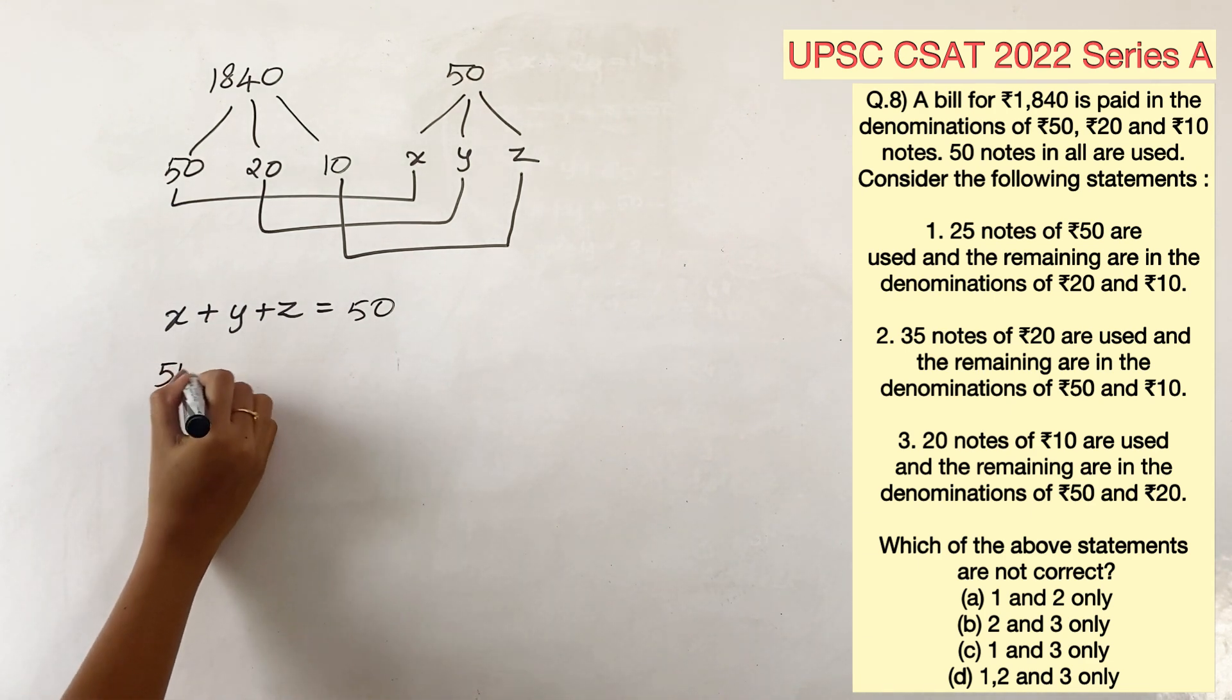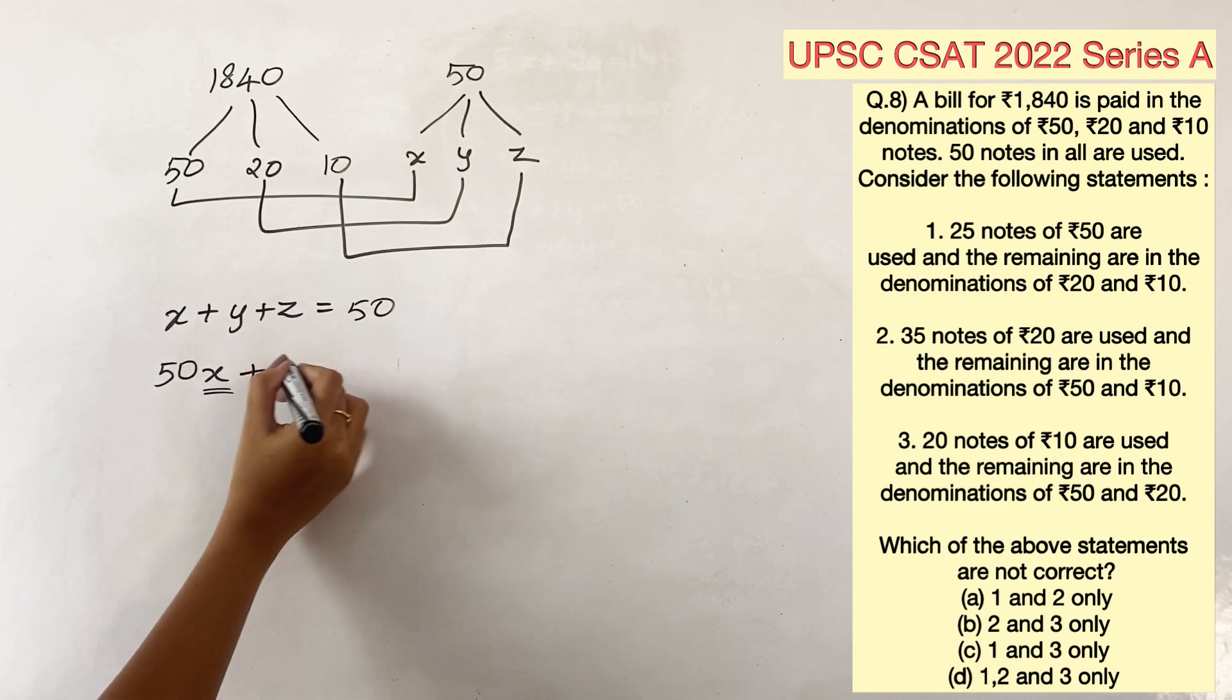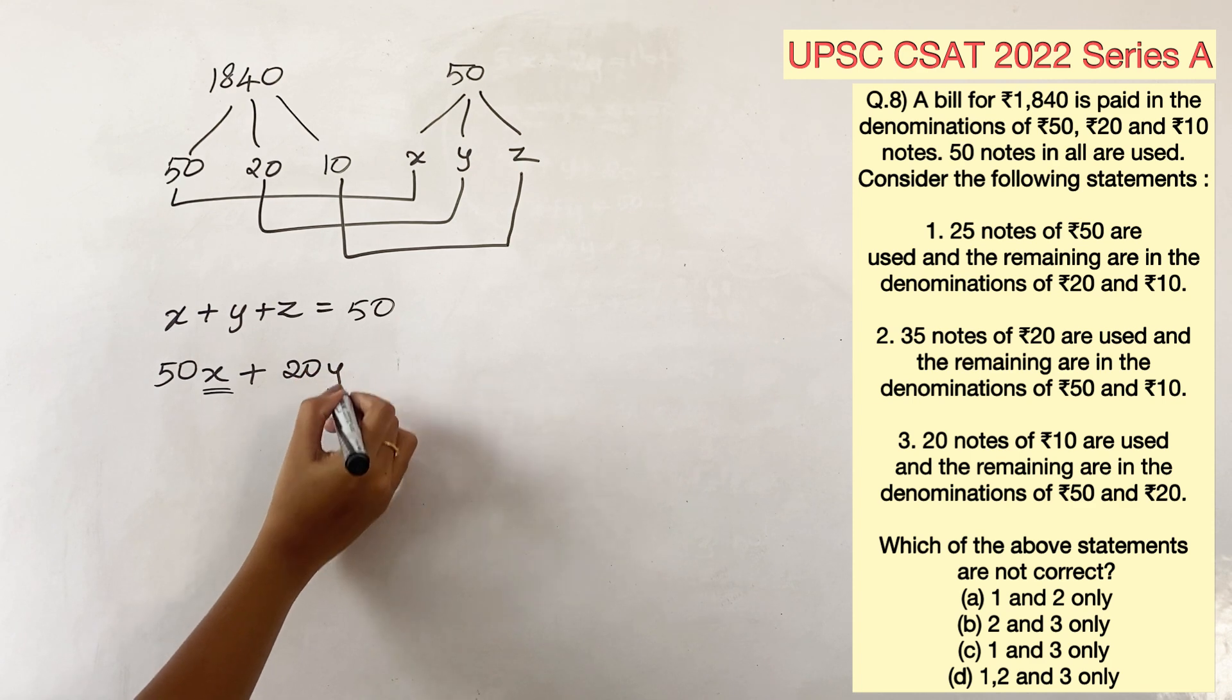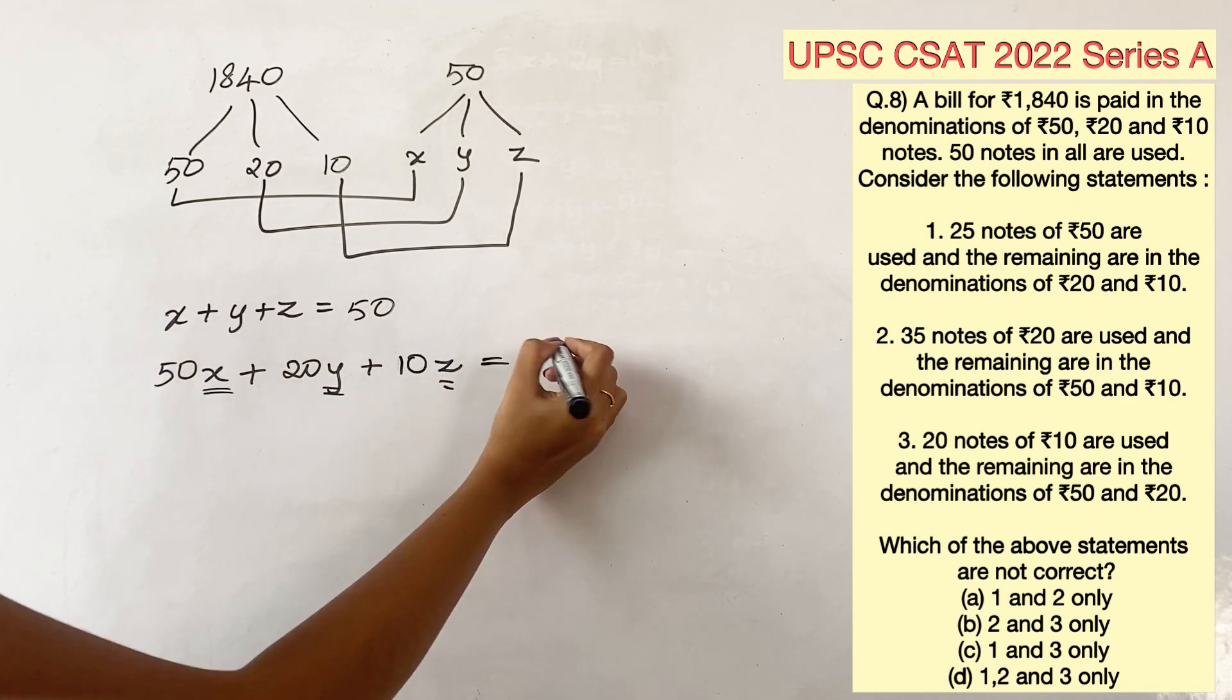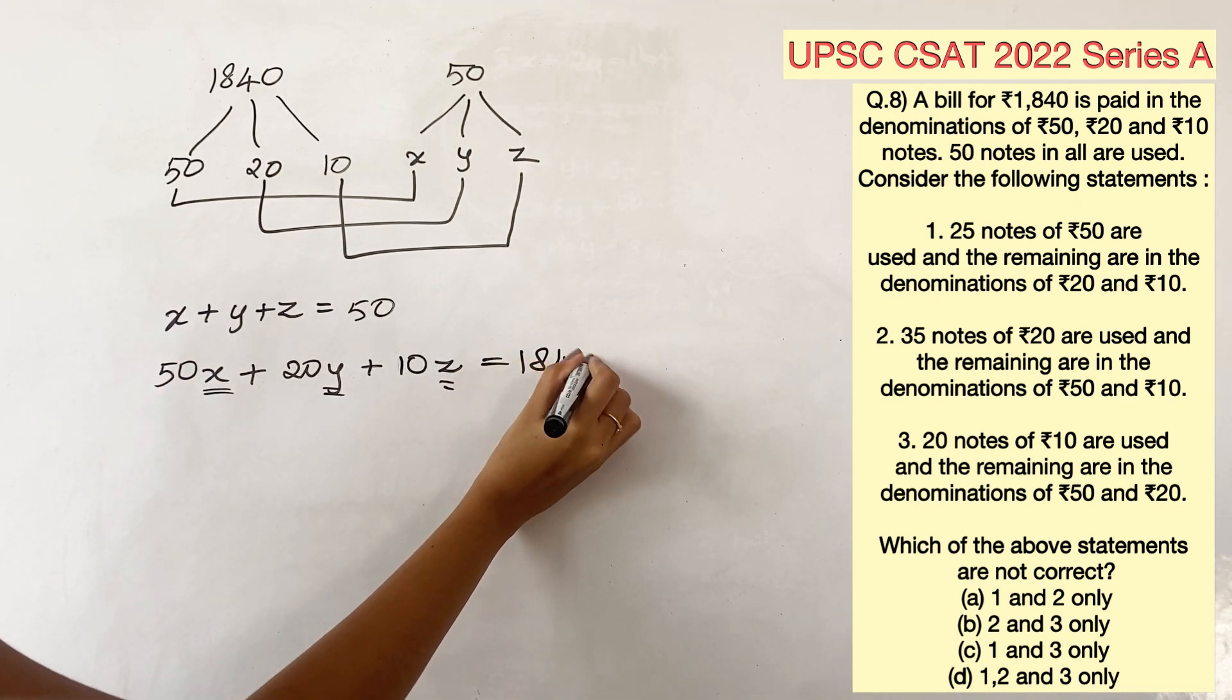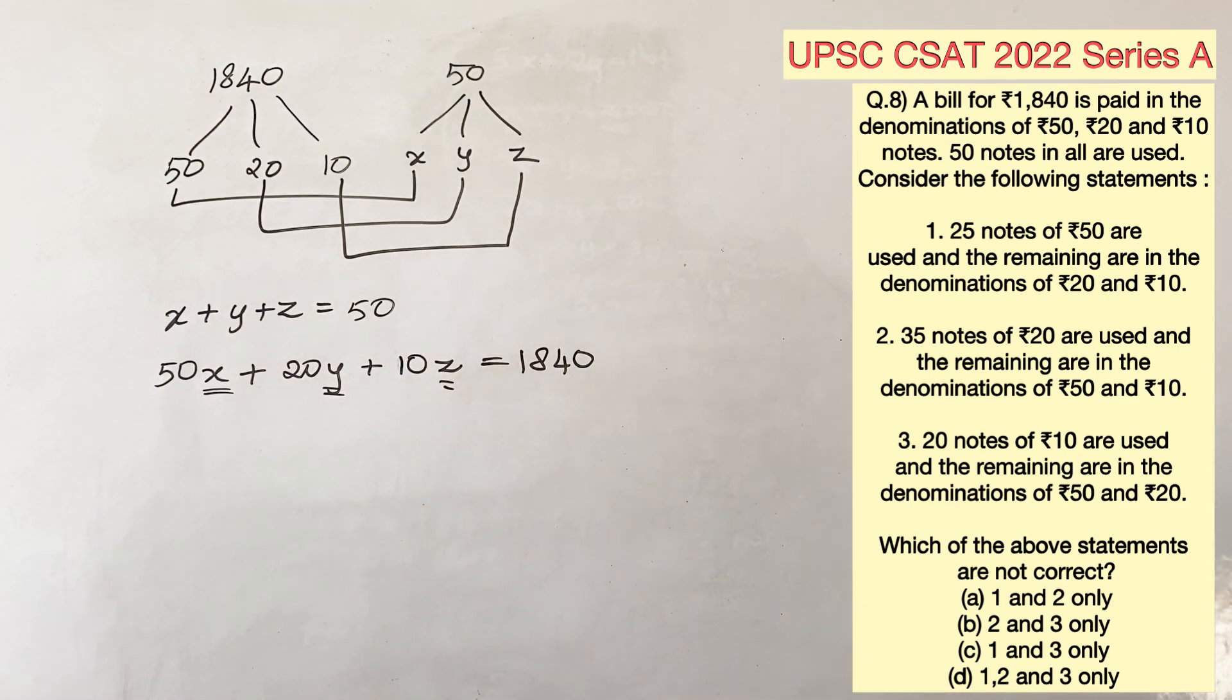We can write the second equation as 50x, where x is the number of 50 rupee notes, plus 20y, where y is the number of 20 rupee notes, plus 10z, where z is the number of 10 rupee notes, is equal to 1840. When we multiply the number of notes with the amount, we get the total amount.